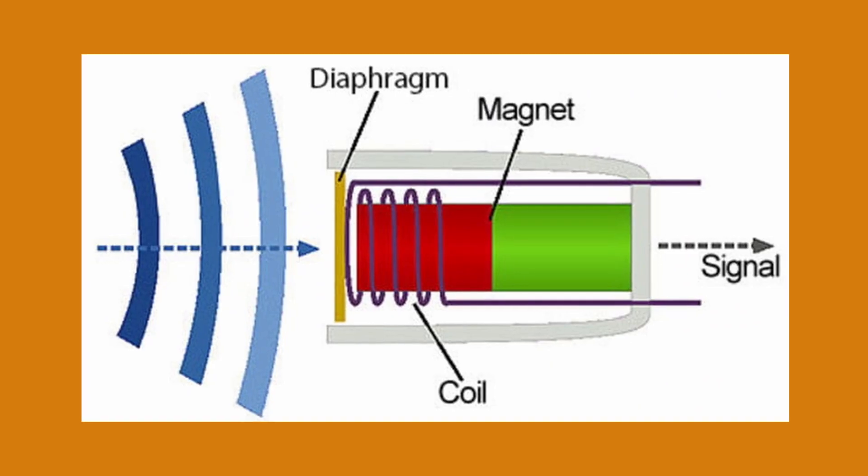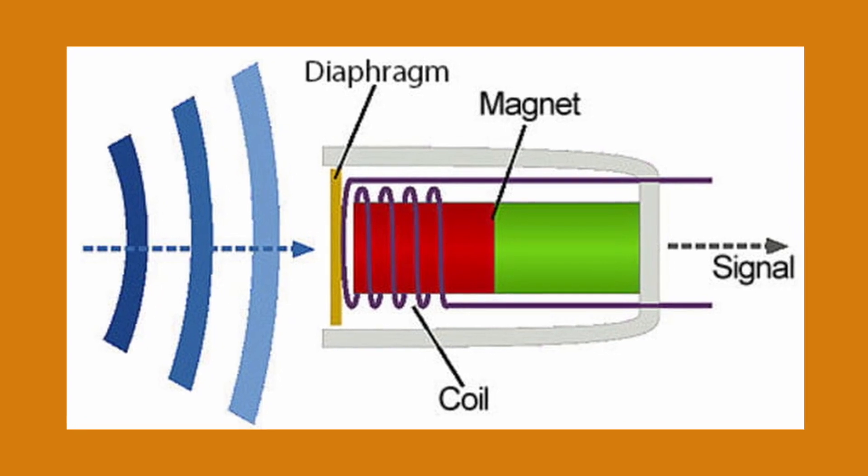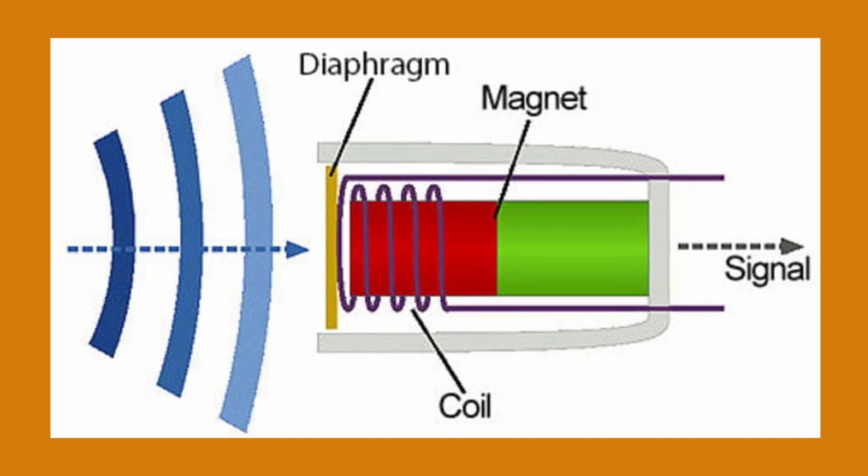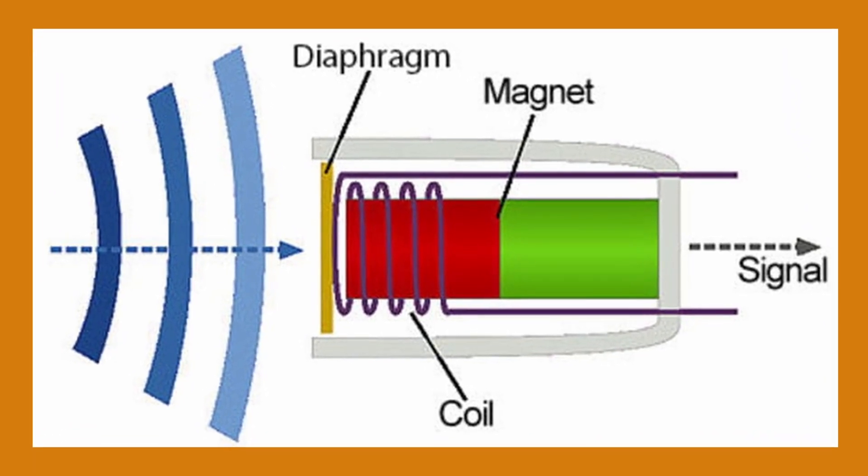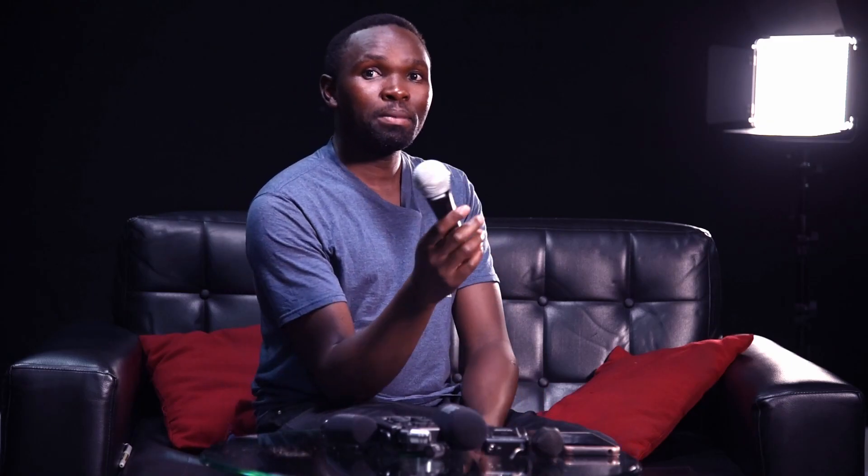This is a dynamic microphone. A dynamic microphone operates on the principle of electromagnetism, which means there is a coil attached to a magnetic field, and when that coil moves, we are able to get our audio signal.